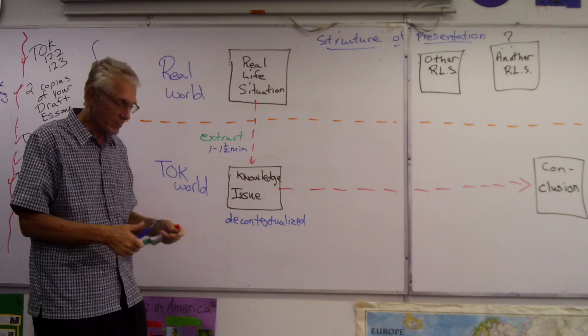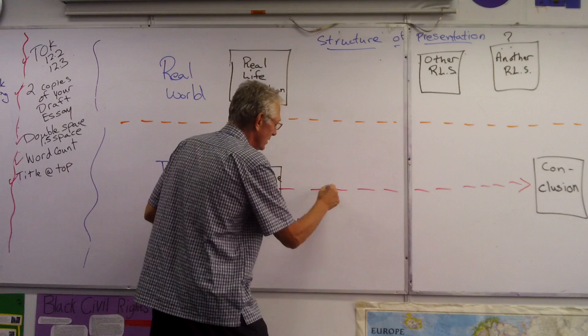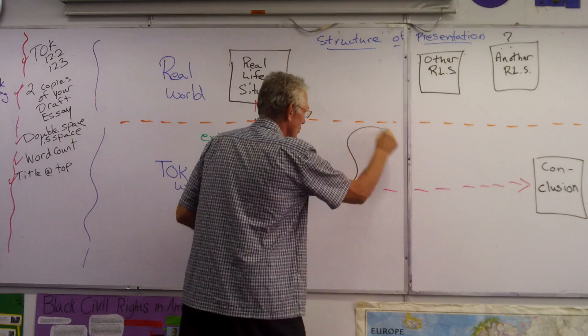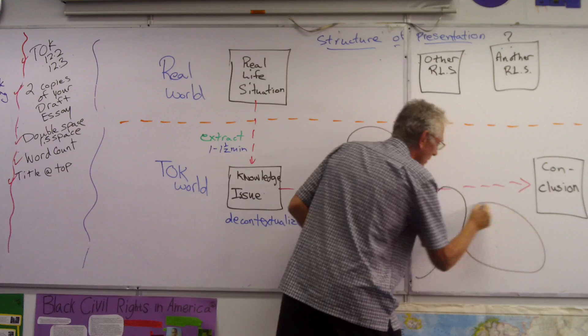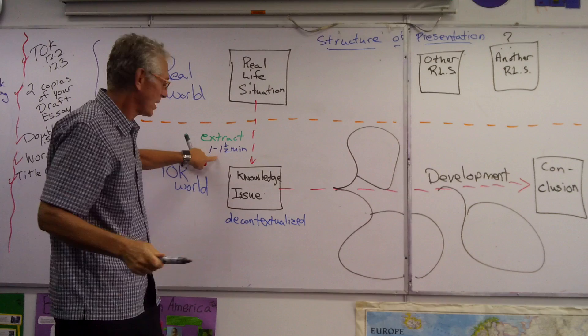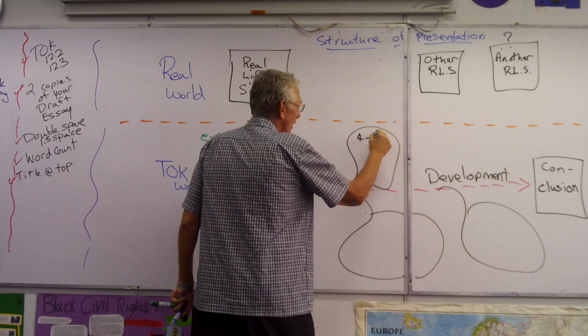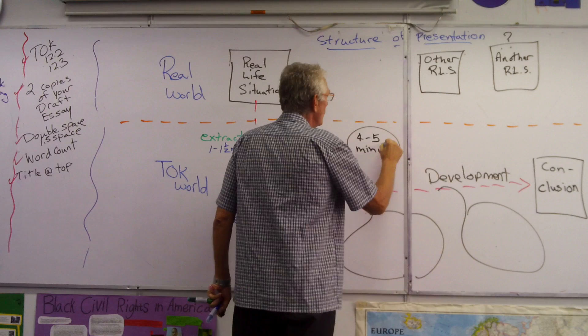That's the first minute and a half, roughly. From there, you move to a series of developments. If you've got 20 minutes and about a minute and a half for the KI, and if you do three or four developments, you'd probably take four to five minutes for each one. That keeps you on time with your presentation.